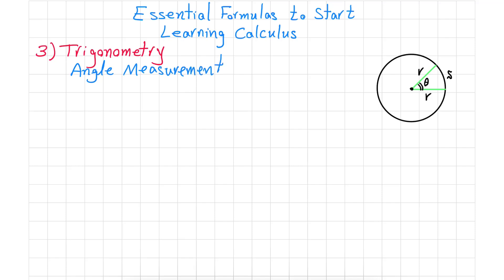We have two important units in trigonometry: radians and degrees. Pi radians is equal to 180 degrees. And if you remember, for the full circle...